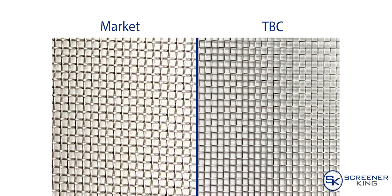The 20 market grade mesh is 16 thousandths of an inch wire thickness, which yields an opening of 34 thousandths of an inch.